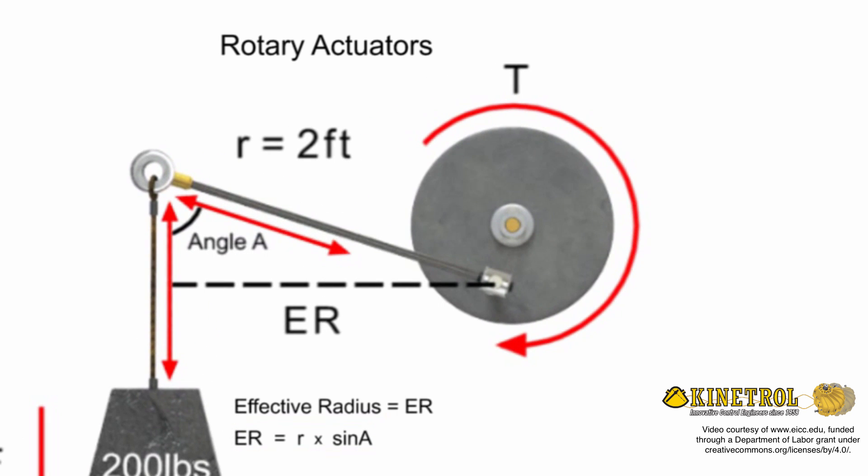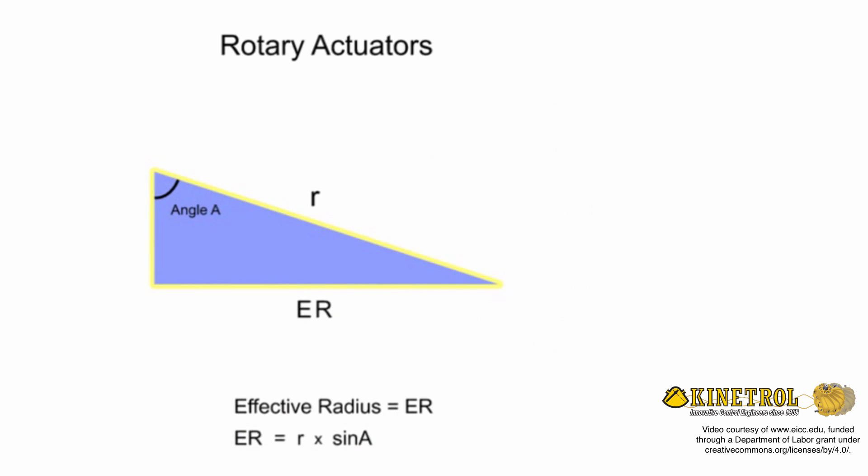Sine is a trigonometric function for a right triangle that relates the ratio of the side opposite of a given angle to its hypotenuse. Sine has values that vary from 0 to 1 for angles between 0 and 90 degrees.